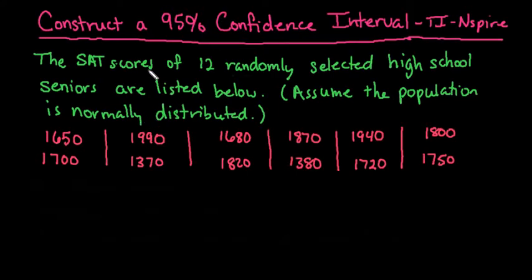Hi! For this example, we're going to construct a 95% confidence interval using the TI-Inspire. We're going to construct a confidence interval for the mean since we are given the SAT scores of 12 randomly selected high school students, and it tells us to assume the population is normally distributed. Since it doesn't give us the population standard deviation, that tells us we want to use the t-interval.